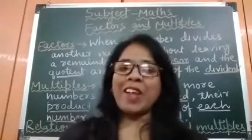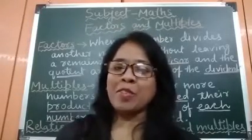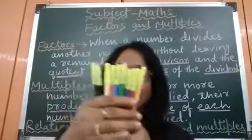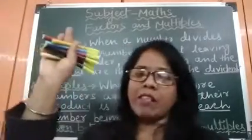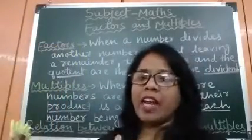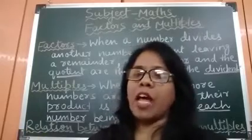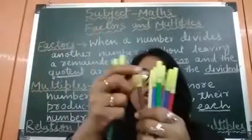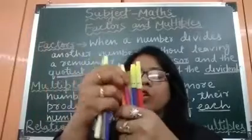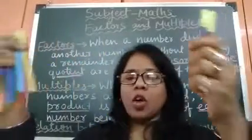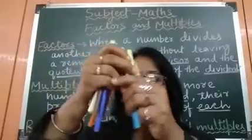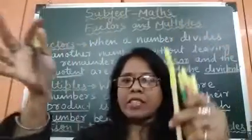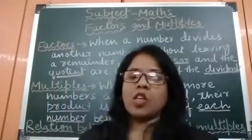Hello friends, welcome to your YouTube channel Solution for All. Today I brought 12 sketch pens. I want to arrange these 12 sketch pens in different orders. First of all, I want to make pairs of two sketch pens: 2, 4, 6, 8, 10, 12. So how many pairs are there? One, two, three, four, five, six — total six pairs.